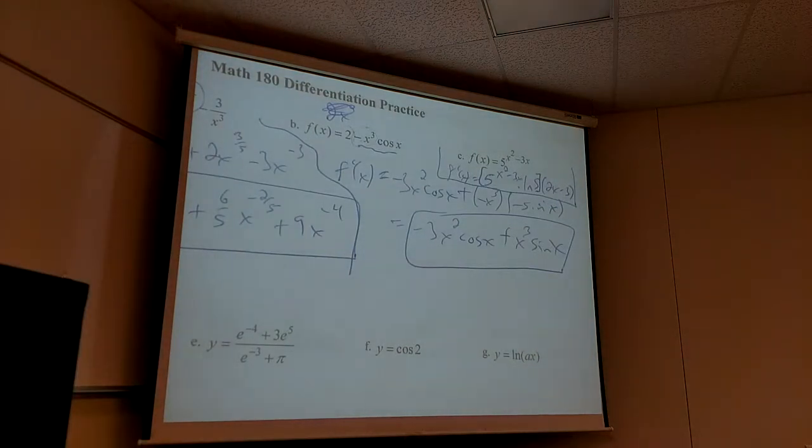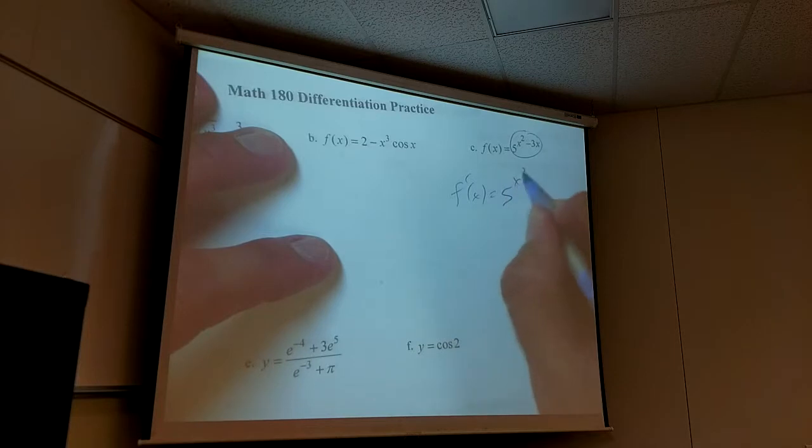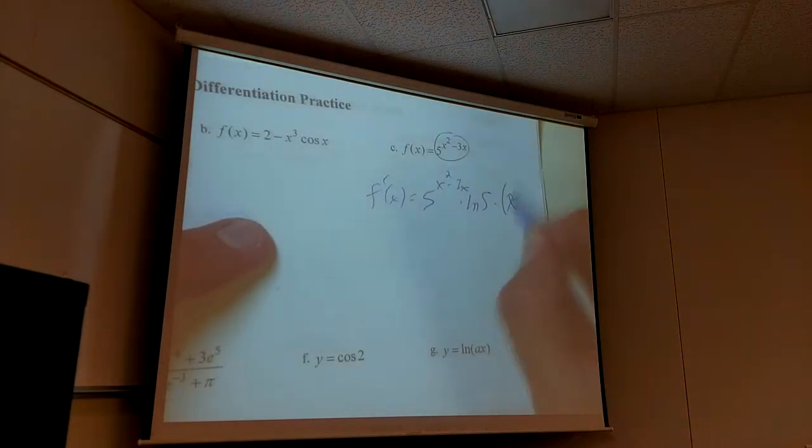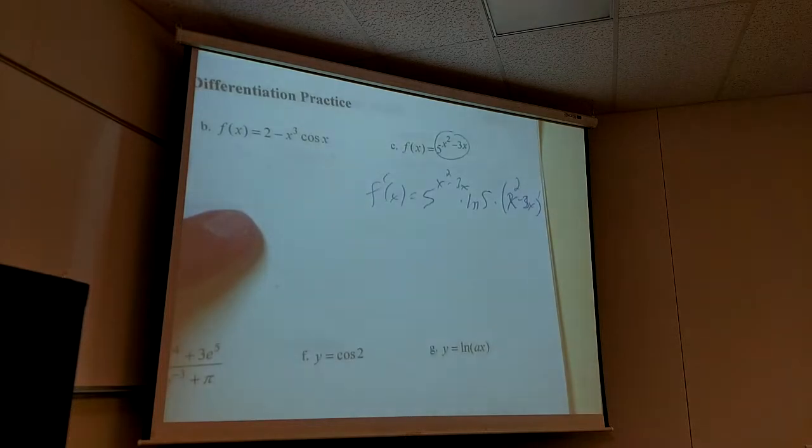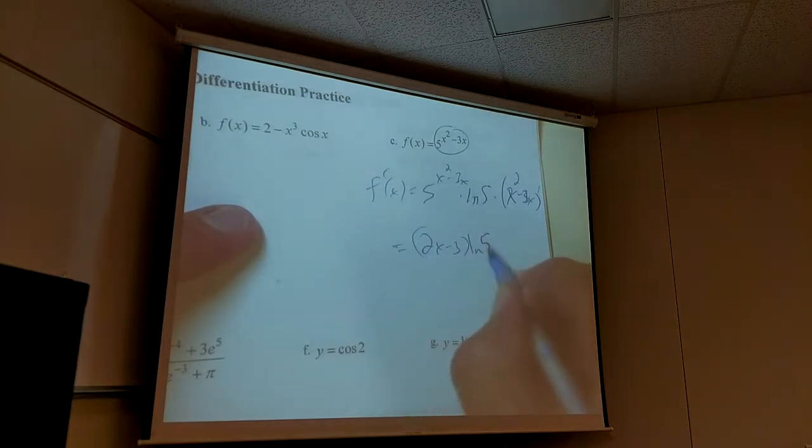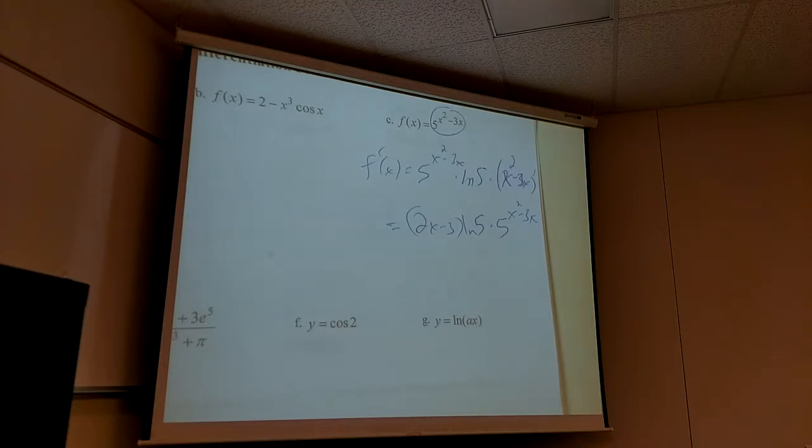So it's the derivative of 5 to something. Well, that's 5 to that thing times ln 5. And then that something gets its own turn. What's the derivative of x squared minus 3x? 2x minus 3. That's the chain piece. People looking at it. What's going on, guys? Let me give myself some more room. So how do you take the derivative of 5 to something? It's 5 to that thing. Times ln 5, right? Times the derivative of the inside. Chain rule. So you end up with, let's write this better. 2x minus 3, ln 5, times 5 to the x squared minus 3x. That's what it is.